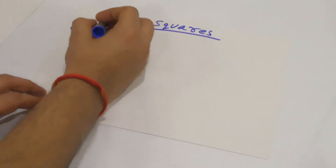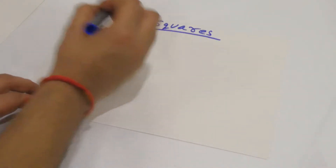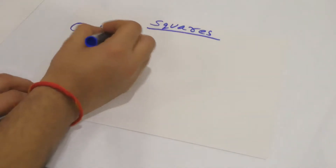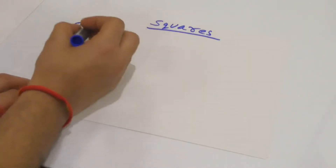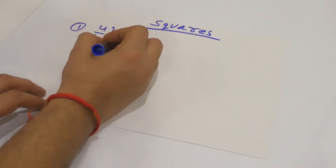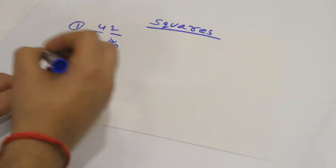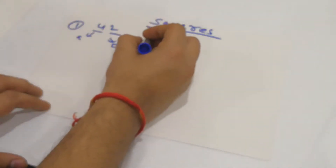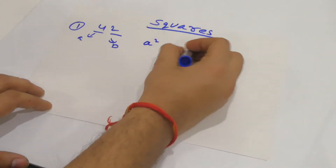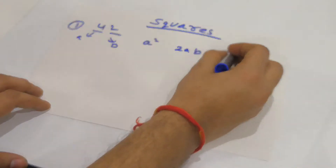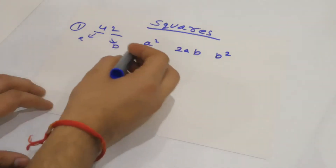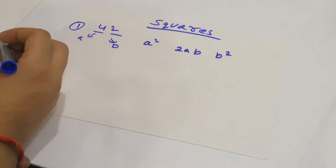Suppose you have to find the square of 42. What I'll do is I'll break this number into two parts — one I'll take as A and the other I'll take as B. I'll use the formula A² + 2AB + B², and you have to write it in this way only.